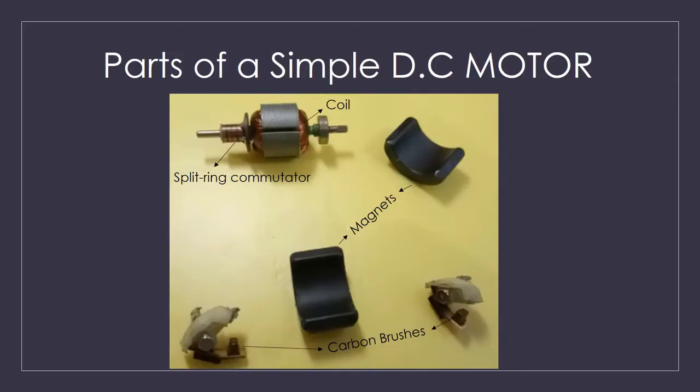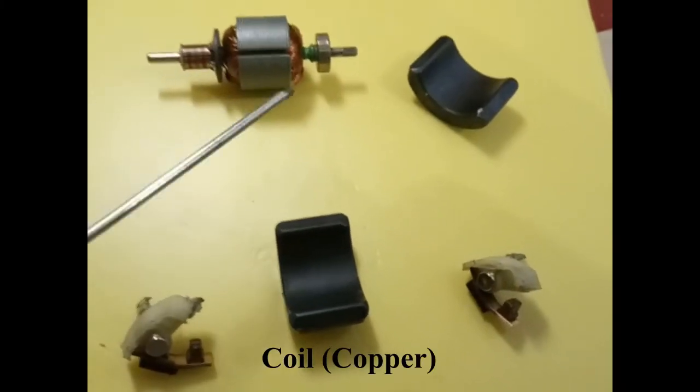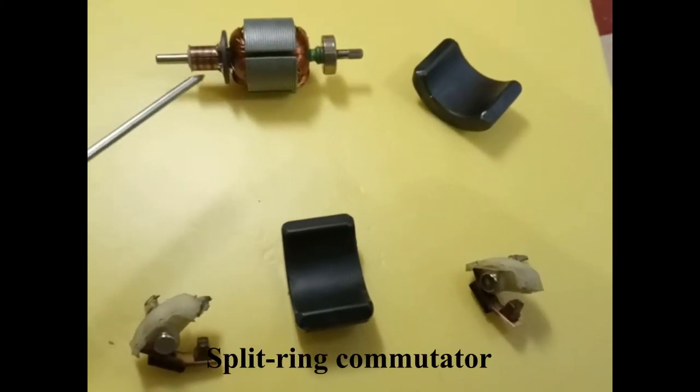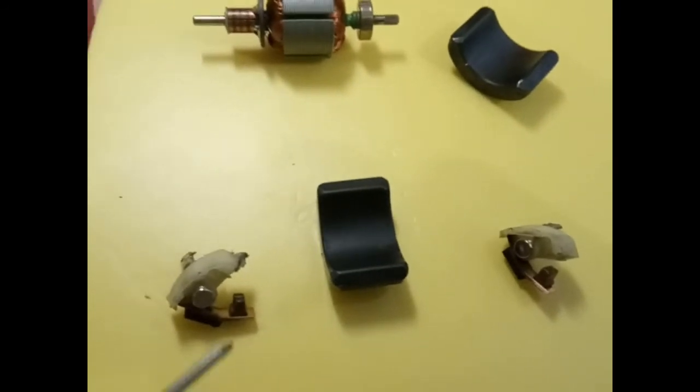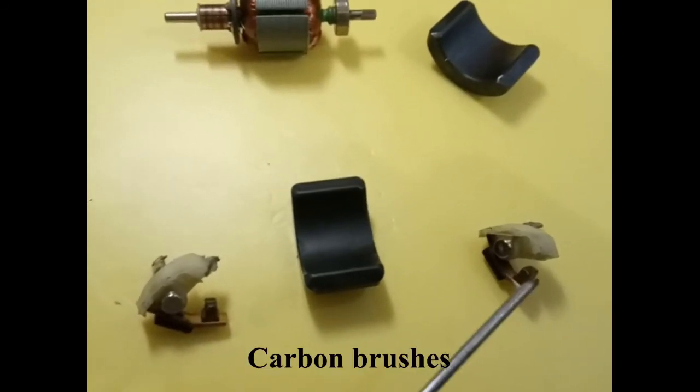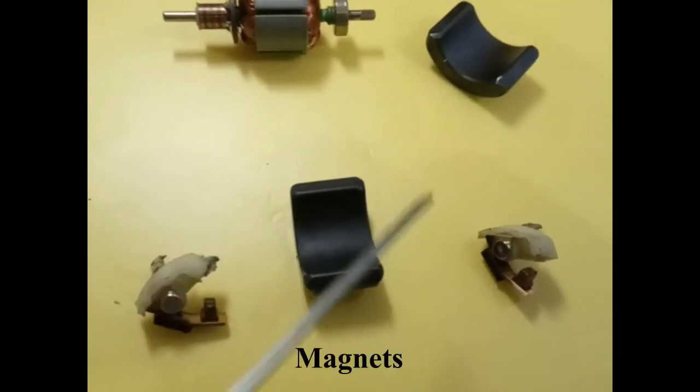Let's have a look at parts of a simple DC motor. Coil, split ring commutator, carbon brush, magnets, North Pole and South Pole.